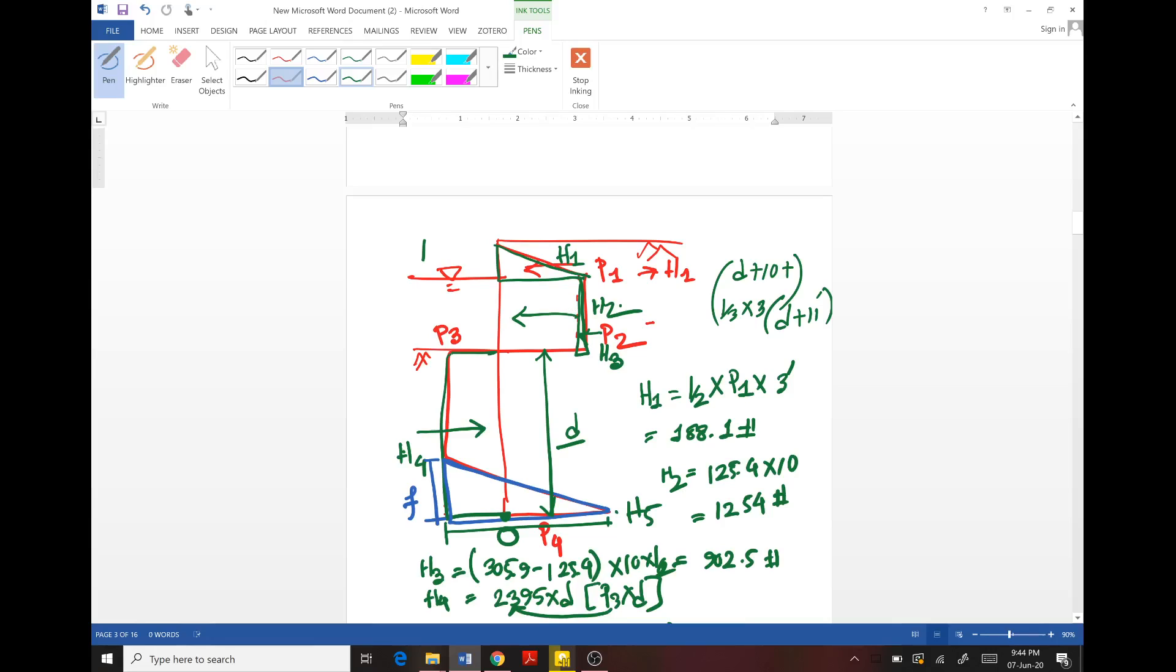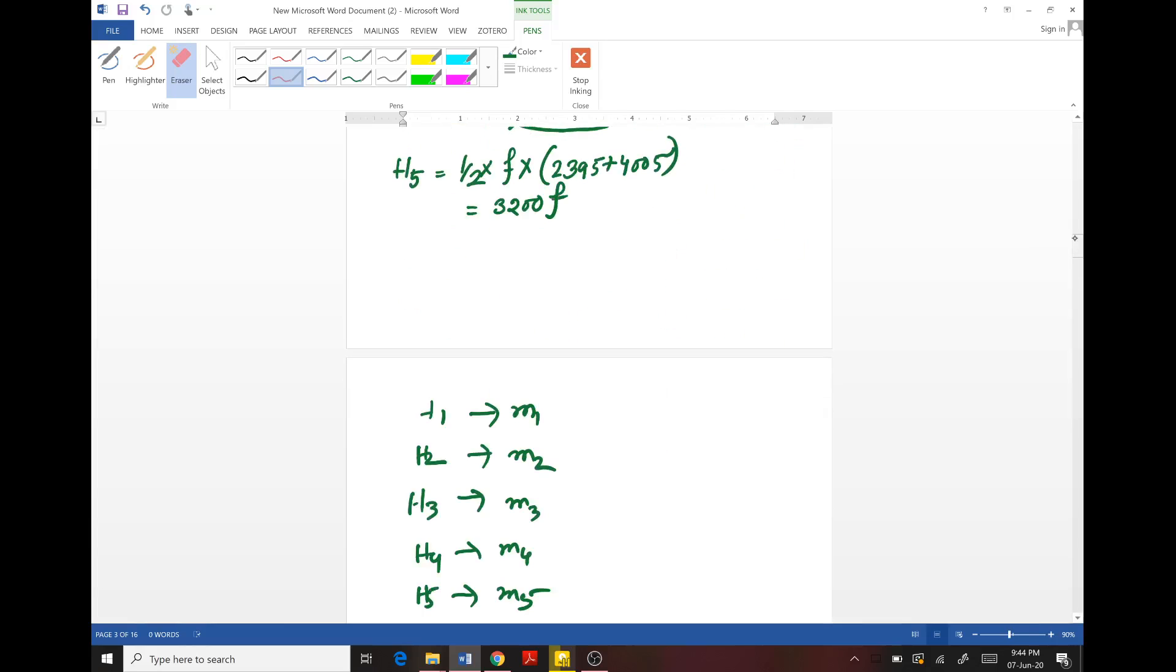Just like this, H2, H3, H4, and H5 will be determined using simple geometry. M1 will be D plus 11, M2 will be D plus 5, M3 will be D plus 3.33, M4 will be D by 2, and M5 will be F by 3.